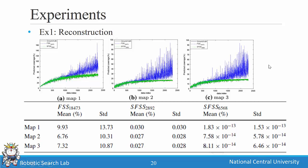For Experiment 1, SFSS achieves better performance than FSS since it finds a better Fourier support. With full Fourier support or partial Fourier support, SFSS can recover the coverage function more accurately.